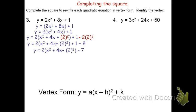Now factor out the inner piece. x squared plus 4x plus 2 squared can be rewritten as 2 times the quantity x plus 2 squared, and then minus 7. I can now determine the vertex. The vertex for this parabola will be at negative 2 comma negative 7.